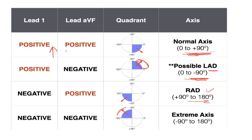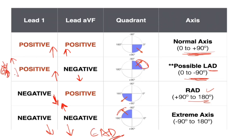If both Lead I and AVF are positive, it is normal axis. If Lead I is positive and AVF is negative, it is left axis deviation. If Lead I is negative and AVF is positive, it is right axis deviation. If both are downward, it is extreme axis deviation.